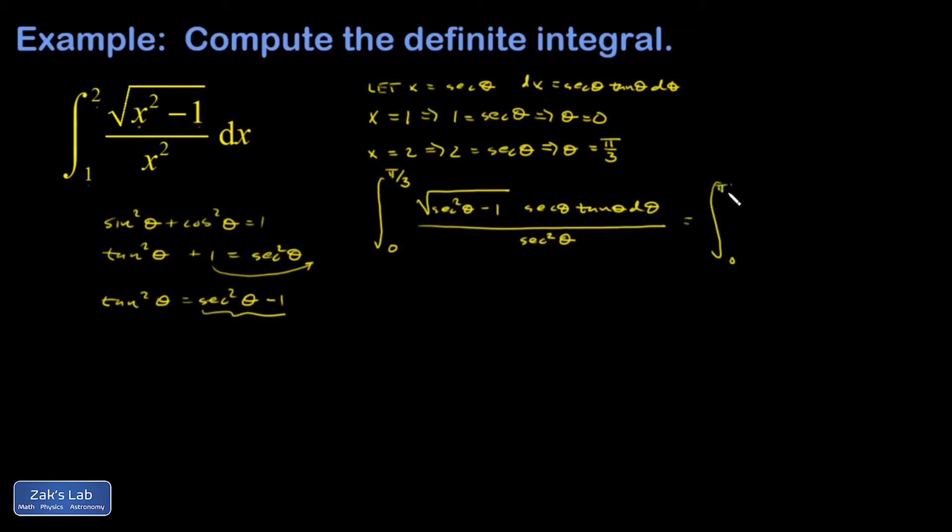So it's the integral from zero to pi over three. And the secant squared theta minus one piece turns into tangent squared theta but it's square rooted. So I have a tangent coming out of this piece and I'll combine it with this one here to give me a total of tangent squared. And I'm going to go ahead and cancel one factor of secant while I'm at it.